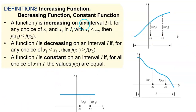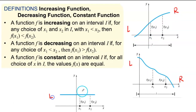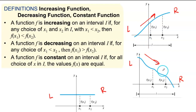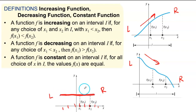Now let's talk about increasing, decreasing, and constant functions. This is my definition. Long story short: when you're graphing, you look at your graph from left to right. If your graph is going up, it's increasing. If your graph is going down, it's decreasing. If it's a horizontal line, that means your y-value is constant — it's the same regardless of your x-value. Let's do an example.